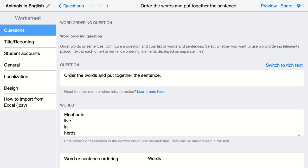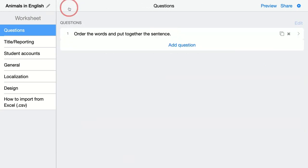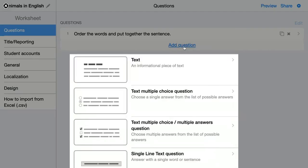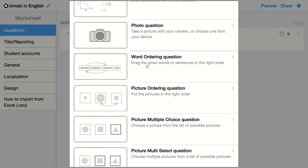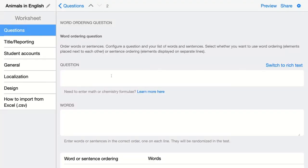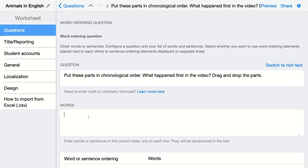You can also add another question using the sentence ordering option. So I just go back and I'm going to add another question. Of course, it's the same question type, word ordering question. And here I'm asking my students to order a complete text or put things in a chronological order. But this is my question. Put the parts in chronological order. What happened first in a video? Drag and drop the parts. I'm going to add the words, but in this case it are sentences.